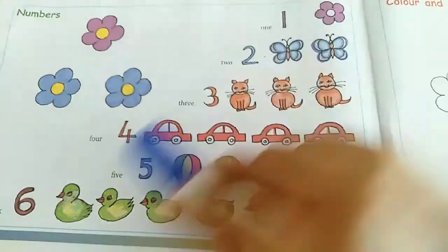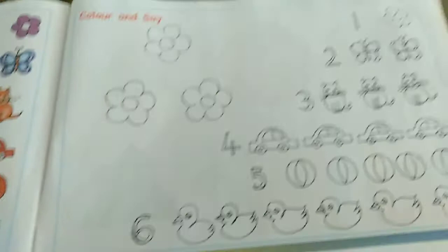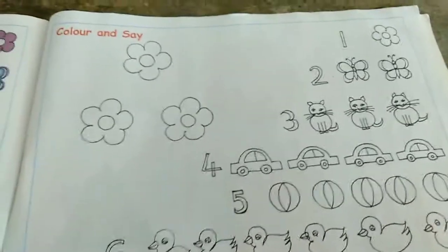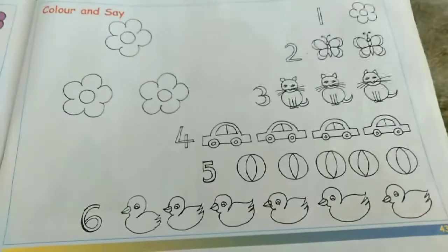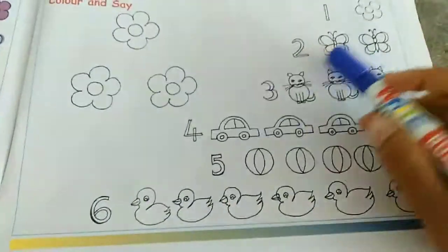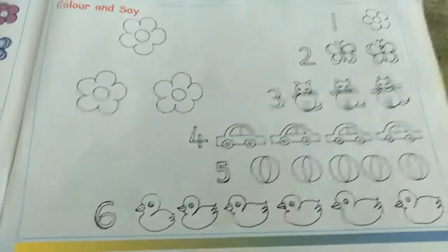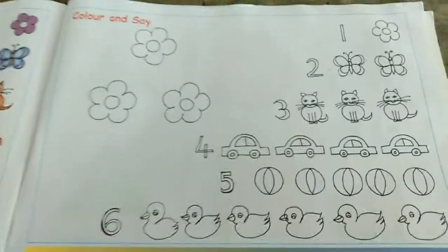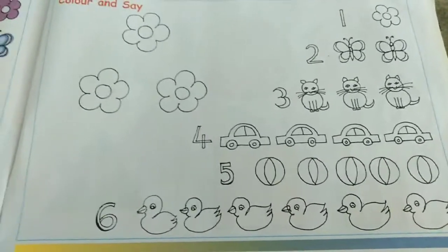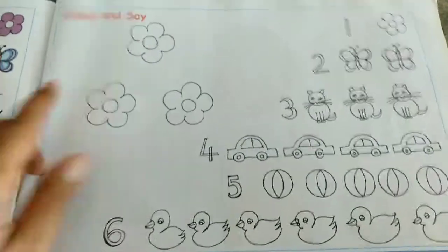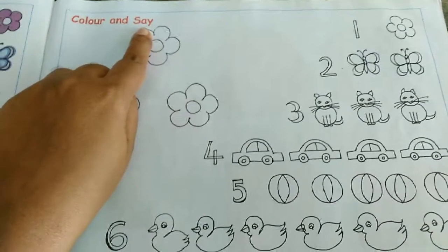Go to page number 43, the next page. What can you see here? You can see numbers and all the pictures. You have to color them. Use pencil colors and color them neatly. First you have to color them, and then you have to say the words. Say the numbers. Color and say the numbers.